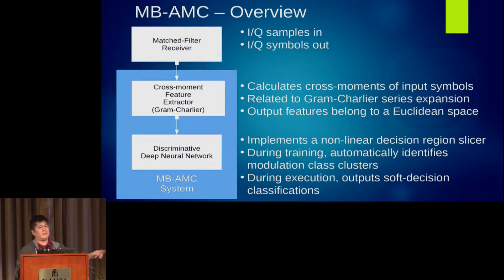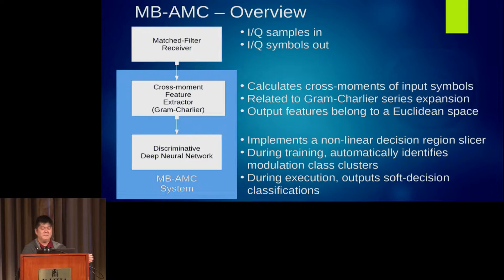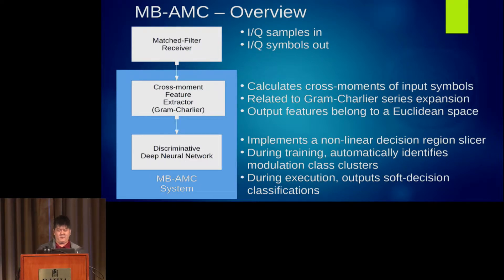The cool thing was that these output features, when we combined all of these moments in particular ways, they all sat in a nice Euclidean space so we could tell how close two different modulations were to one another. That got me really excited. Then we did a discriminative deep neural network.